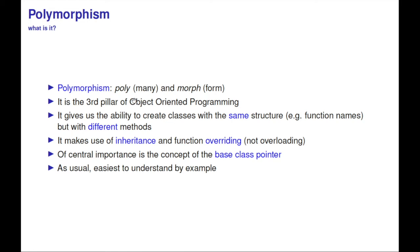What is polymorphism? It comes from the Greek poly, meaning many, and morph, meaning form. It's the third pillar of object-oriented programming. The idea is to create classes with the same structure—for example, all function names are the same—but with different methods or implementations. It makes strong use of inheritance and function overriding, not overloading.